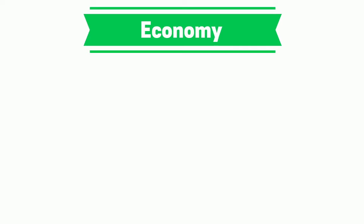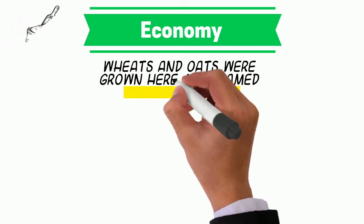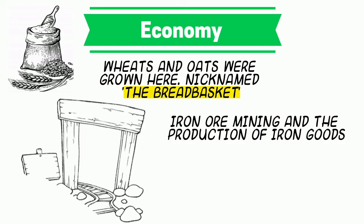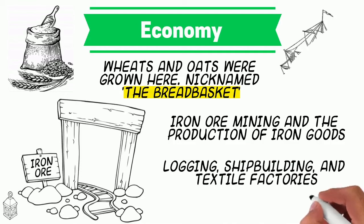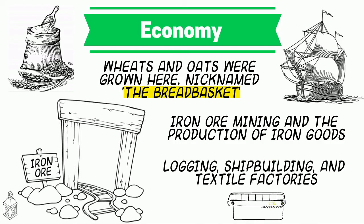The Middle Colonies' economy was centered around wheat and oats, which is why they get the nickname the breadbasket. But in addition to that, they also produced iron from their mines and iron goods for the rest of the colonies. Just like New England, the Middle Colonies also had vast timber resources used for shipbuilding and logging. And of course the Middle Colonies are well known for their textiles, their factories, and manufacturing.